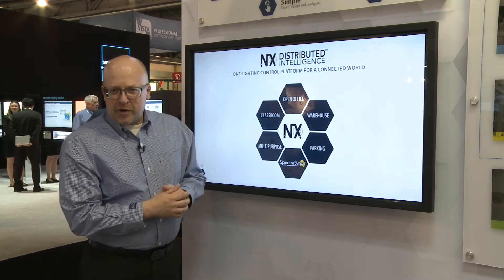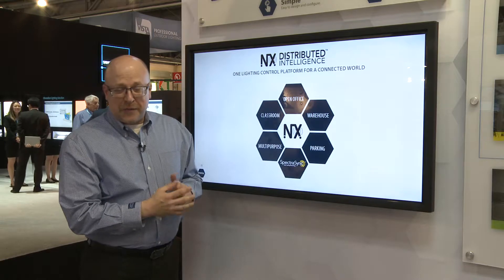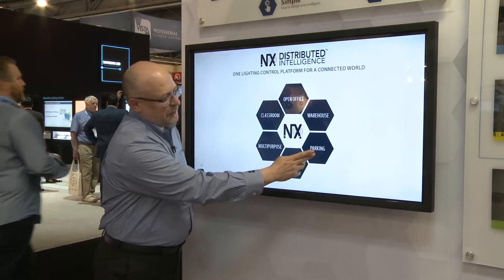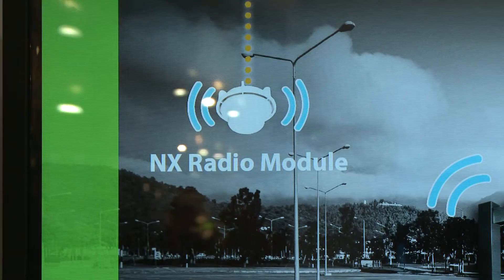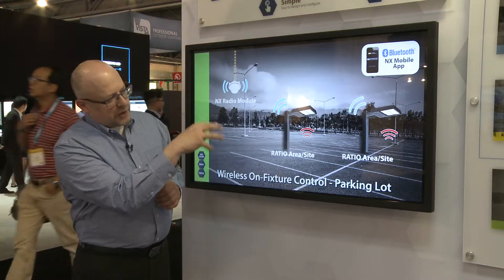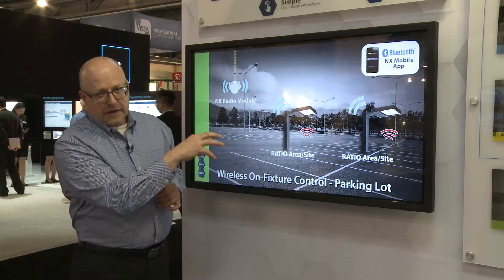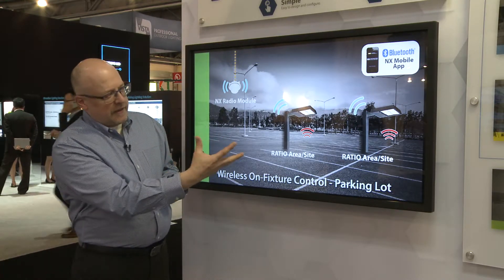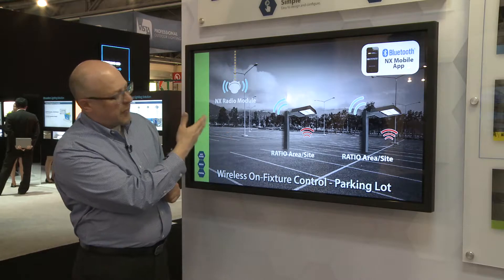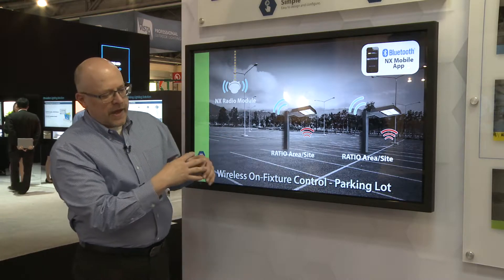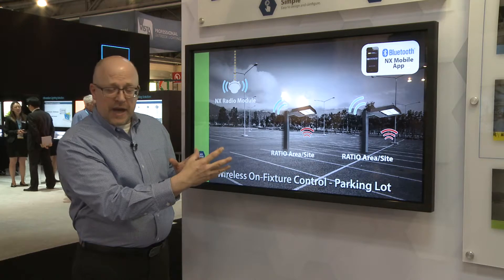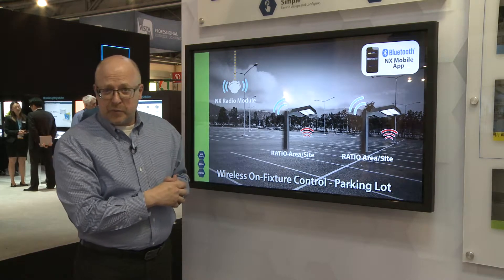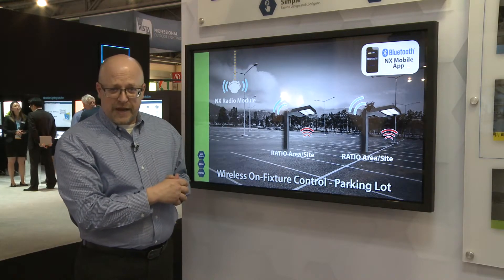Going on to the outdoor environment, which is something NX can also cover — this example of a parking lot — I might have the ratio area site pull-top fixture with a sensor plugged into the top in a NEMA 7-pin configuration. That creates a wireless mesh network back to the NX radio module and can be self-contained or could be used in combination with the rest of the interior of the building to create one seamless NX network.